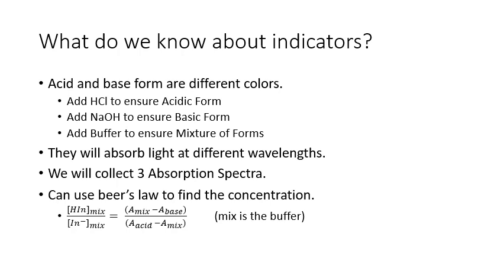But if we want to find the ratio of the acidic form of the mixture over the basic form of the mixture we just take the absorbances of the mixture. And when I say mixture I mean the absorbance of the solution of the indicator in the buffer. We subtract the absorbance of the base, that's divided by the absorbance of the acid minus the absorbance of the mixture. This helps us find that ratio of the acidic form of the indicator in the buffer and the basic form of the buffer.